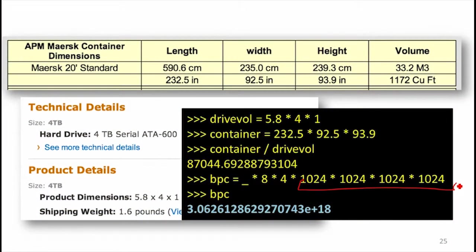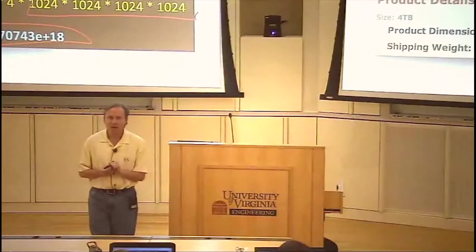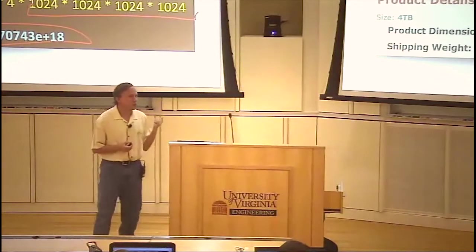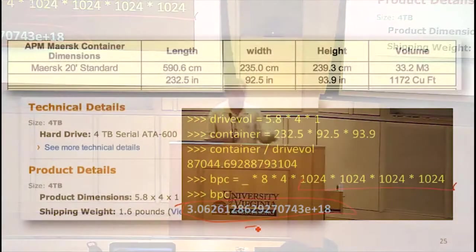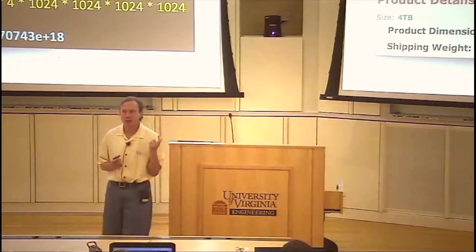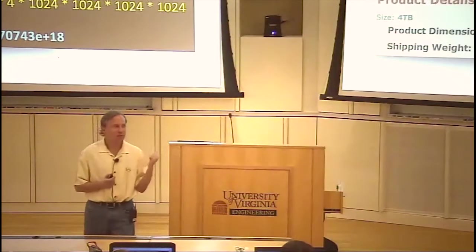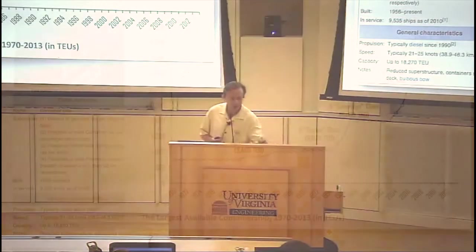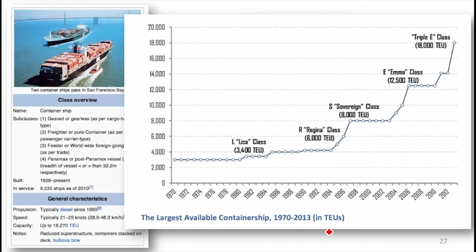The number of bits in our shipping container is 3 times 10 to the 18. That's not even a zettabyte — a zeta is 10 to the 21. If we want to ship a zettabyte, we need 2,000 shipping containers full of terabyte drives. But that's actually not that hard to get on a ship, because one of these ships — measured in TEUs — can hold 18,000 containers. That's about 6 zettabytes on our ship.